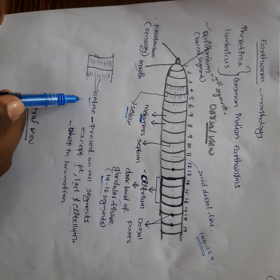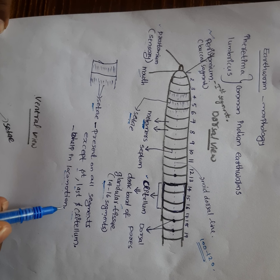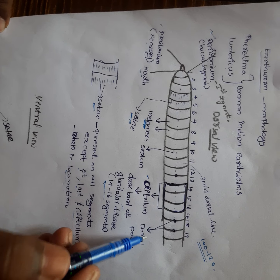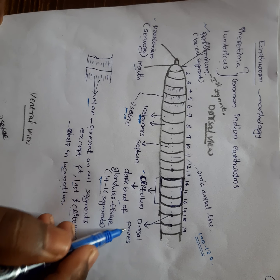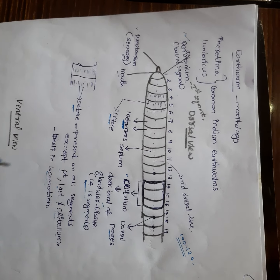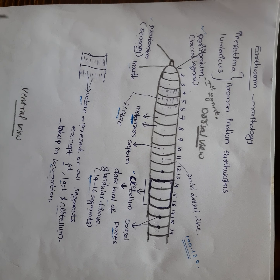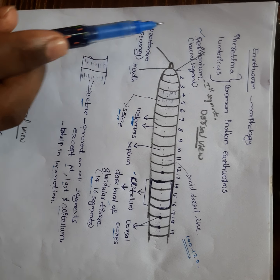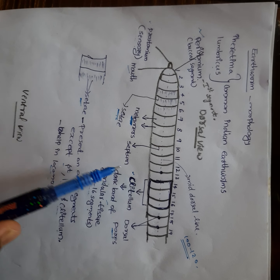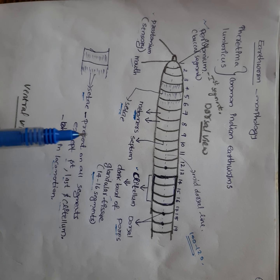The function of setae is to help with locomotion. We can also see some other structures like dorsal pores. The most important structures in earthworm are: first, peristomium; second, prostomium; third, clitellum; and fourth, setae.